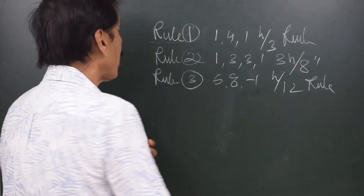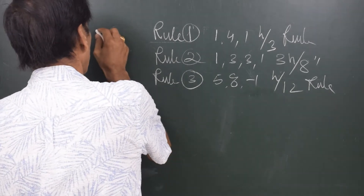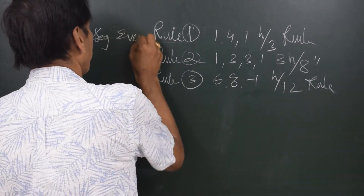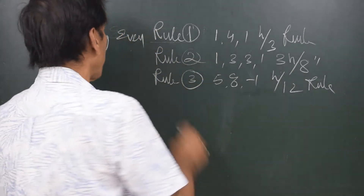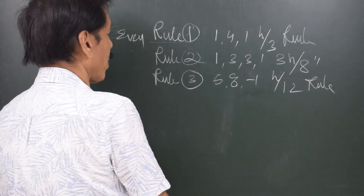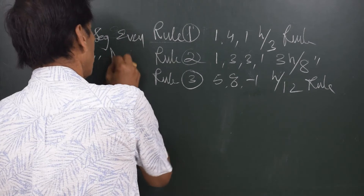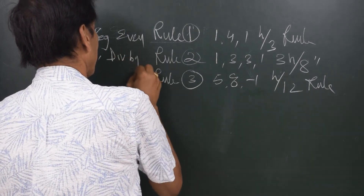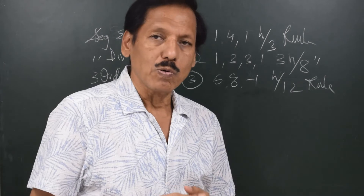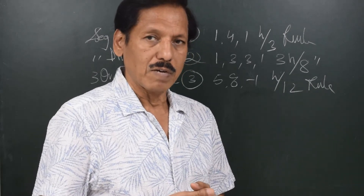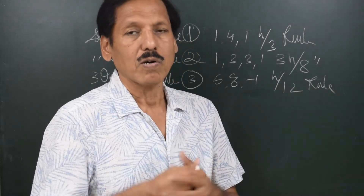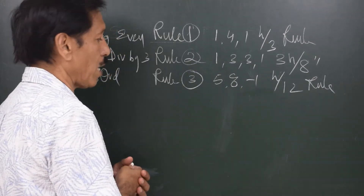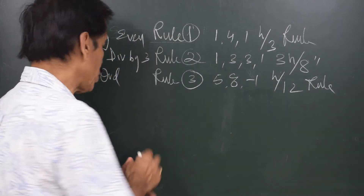Rule number one can be used when the number of segments are even. Rule number two can be used when the number of segments are divisible by three. Rule number three can be used when there are three ordinates and we have to find out the area under the first and second ordinates or the second and third ordinates. Now let us understand when we can use each rule.